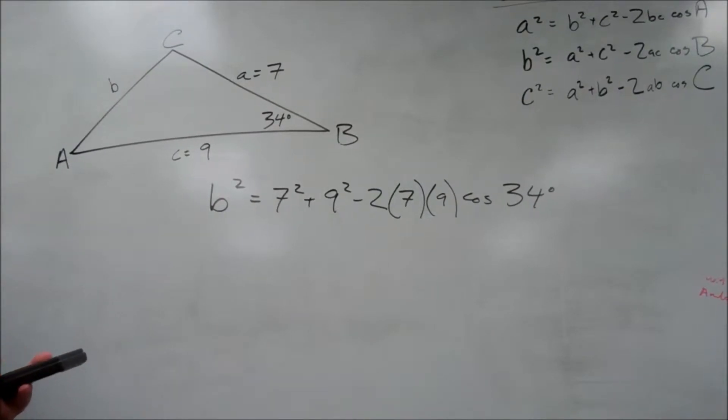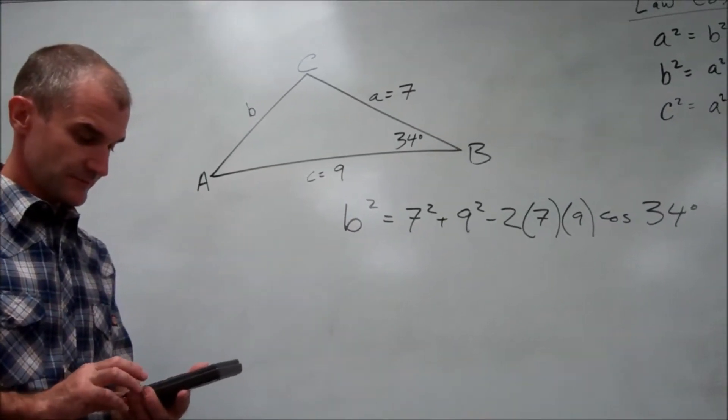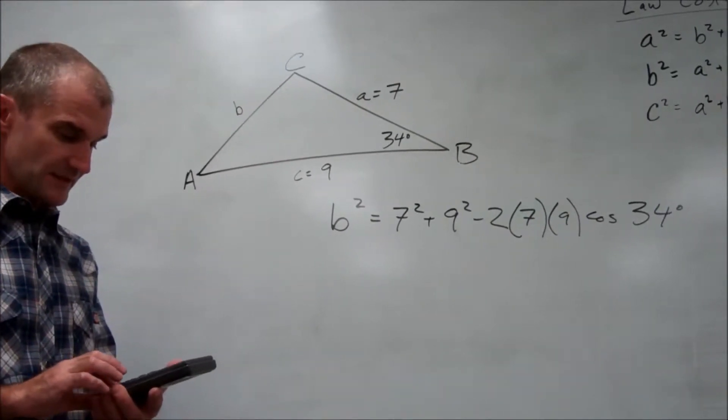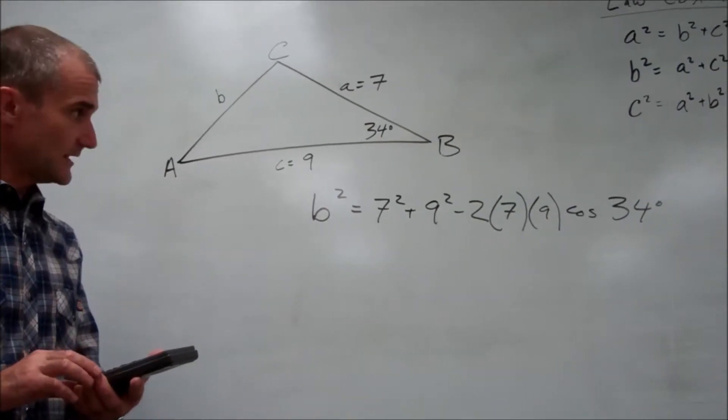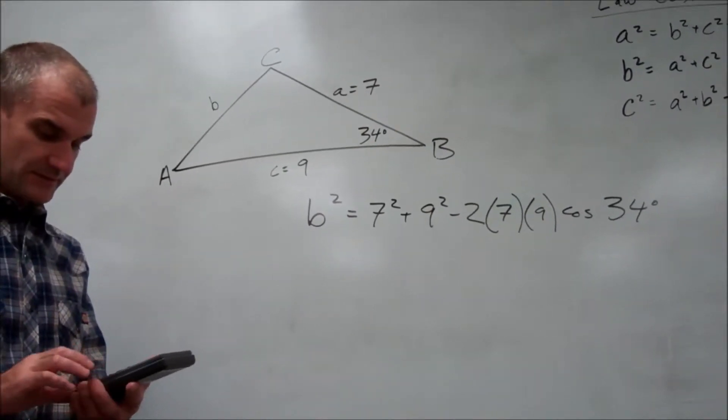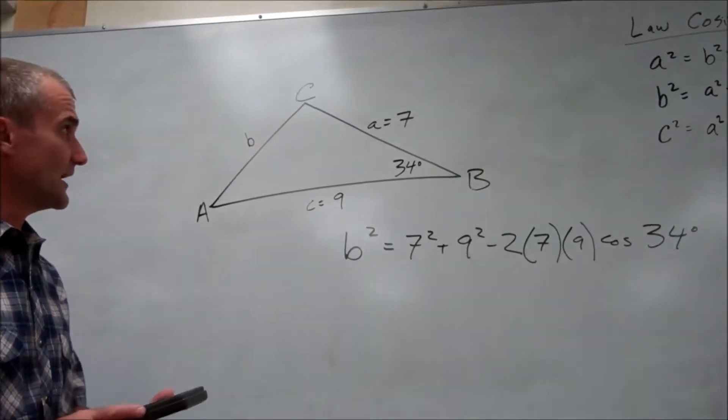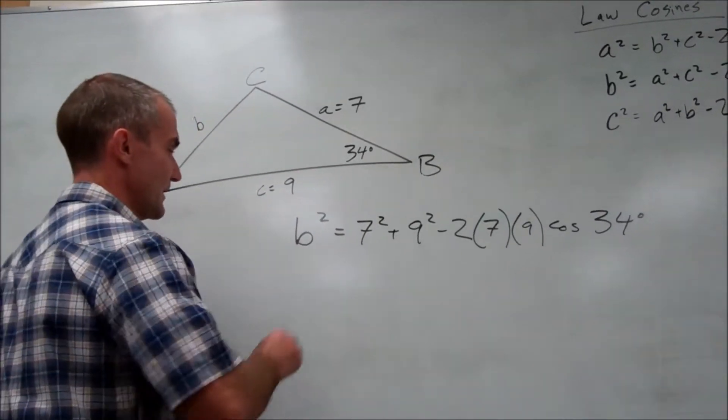I go cosine of 34 times 9 times 7 times negative 2 plus 9 squared plus 7 squared, and I get 25.5. So B squared is 25.5.